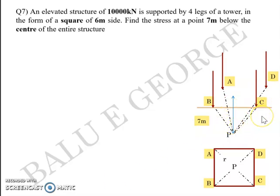To apply the Boussinesq equation, we know z as 7 meters, but we need to know the radial distance of point P from each of these legs. For instance, the radial distance of P from A is nothing but half the diagonal distance AC. So AC by 2 will give you radial distance r. So AP equals r is half the diagonal, which turns out to be 4.24 meters.